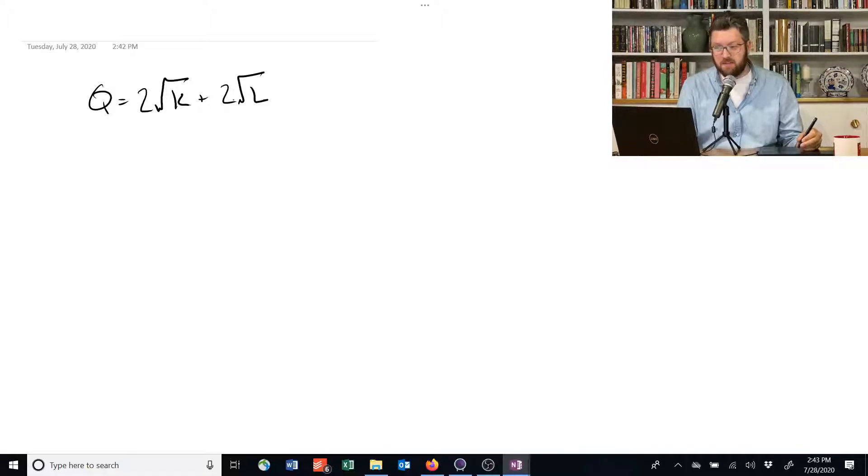So in this case, if you've got, for example, 4 capital and 4 labor, the square root of that is 2. And so you're going to end up with 2 times 2 is 4 plus 2 times 2 is 4. You're going to end up with 8 output if you've got 4 units of capital and 4 units of labor.